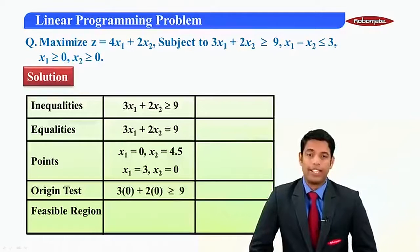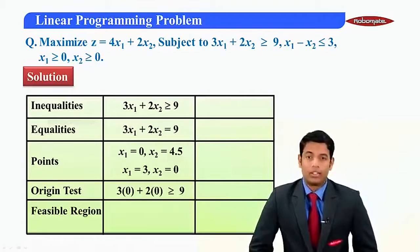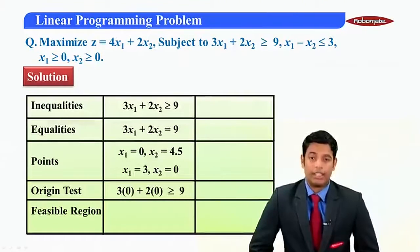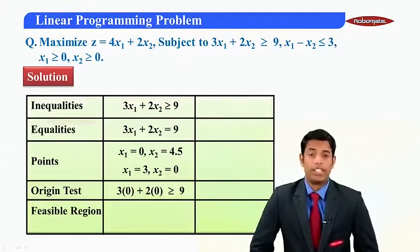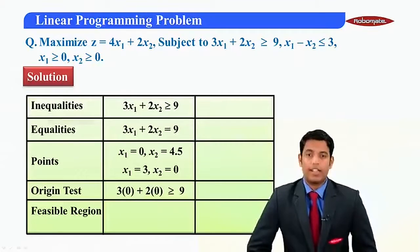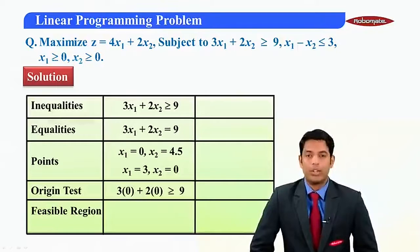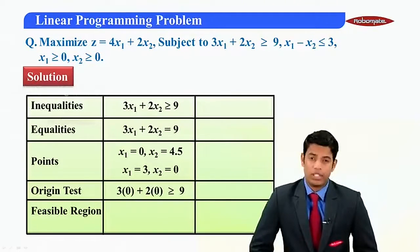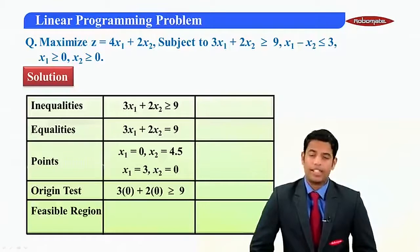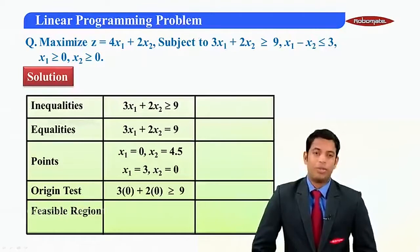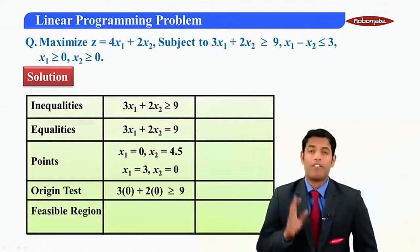...and put x2 as 0 will get x1 as 3. So these are the points on this line. Now we will apply origin test to this inequality, that is put x1 and x2 as 0 in the above inequality. We will get 3 into 0 plus 2 into 0, that is 0 greater than or equal to 9, which is obviously false.